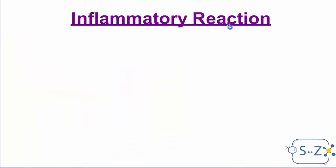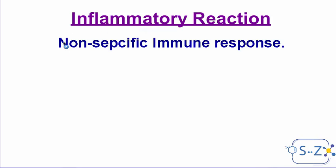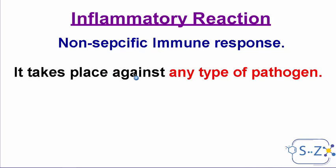This reaction that takes place when a pathogen enters the body is the first reaction of the immune system. It is called an inflammatory reaction or inflammation, and its type is a non-specific immune response. We call it non-specific because it takes place against any type of pathogen — virus, bacterium, or any other microorganism. It is the first response to take place, and it doesn't matter what type of pathogen is entering the body.